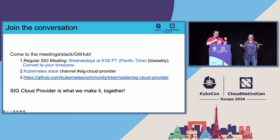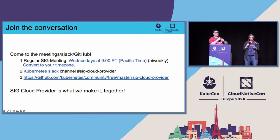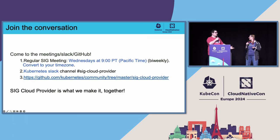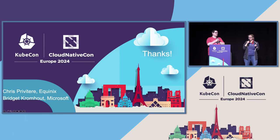How can you contribute? Come to the meetings — Wednesdays at 9 Pacific, noon Eastern. Join the community Slack; SIG Cloud Provider is the channel. Come say hi, and let's talk cloud providers. You can also get involved in the code base directly. SIG Cloud Provider is what we make it together, and that's what we want to do with you. Thank you, we appreciate you, and we'll hopefully see you all in the community.